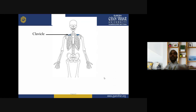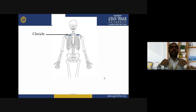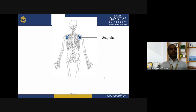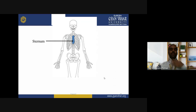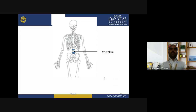Quick review of bone names and numbers: clavicle (collarbone), 2 clavicles and 2 scapulas make the pectoral girdle. Coastal ribs: 12 pairs equals 24 ribs plus 1 sternum equals 25. Vertebra: 26 — cervical 7, thoracic 12, lumbar 5, sacrum 1, coccyx 1. Then 2 humerus — the humerus bones. Ulna and radius (thumb side) — 2 ulna and 2 radius.